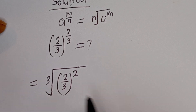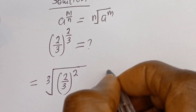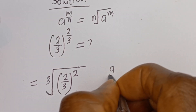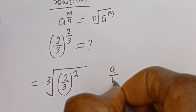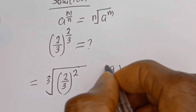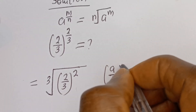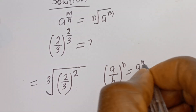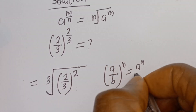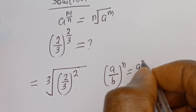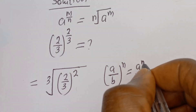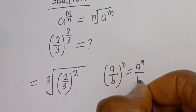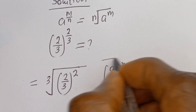Now take note of this: if you have a divided by b, to the power of n, this is equal to a to the power of n divided by b to the power of n.